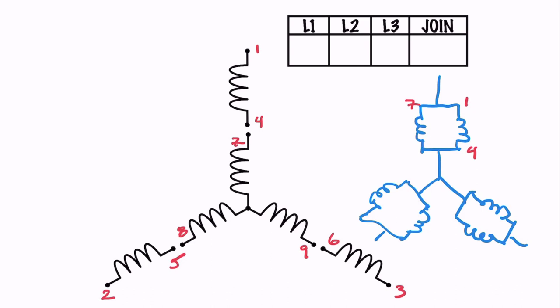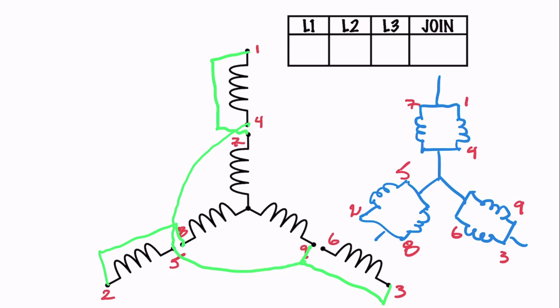Moving over to lead two — I've got two and five — and I'm going to connect two to eight, which then connects to the phantom lead. Then I've got three and six, and I'm going to connect that to nine and the other phantom lead. So this shows us that we're going to parallel one and seven, parallel two and eight, and parallel three and nine. We're also going to connect four, five, and six together.